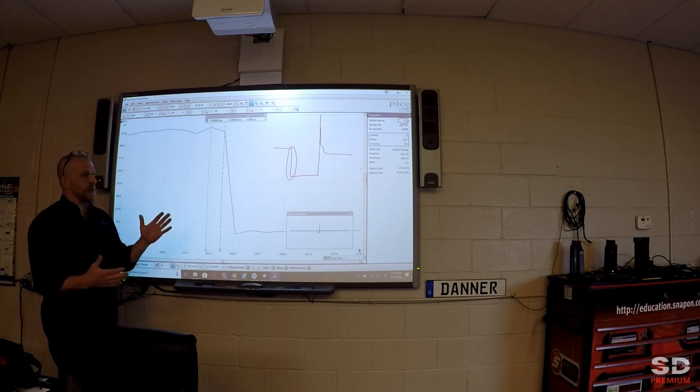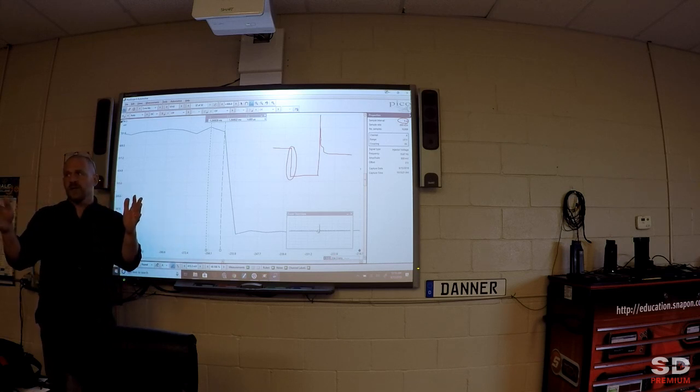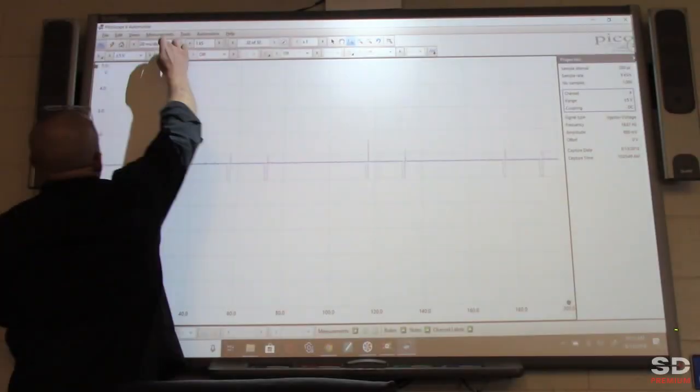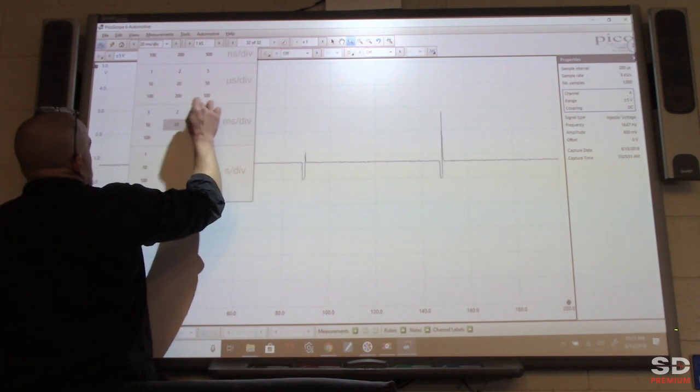The idea with a sample rate is you wouldn't want your interval too far apart because if the interval's too far apart, then you're going to miss some detail. If I drop this time base back down, let's go back down to five.